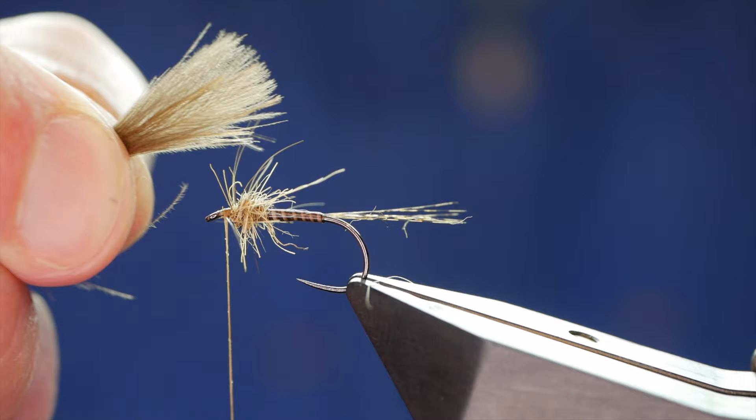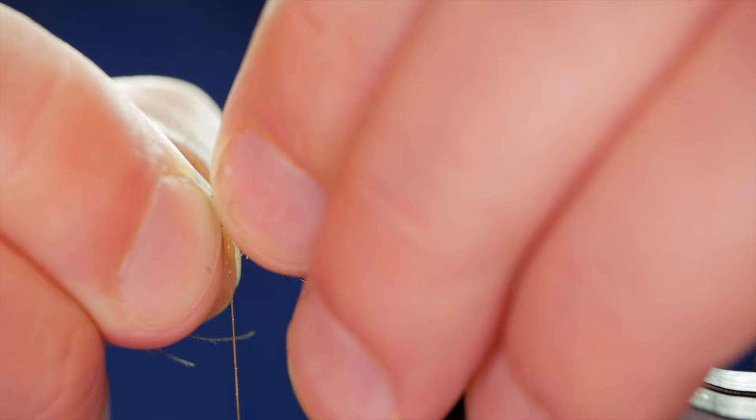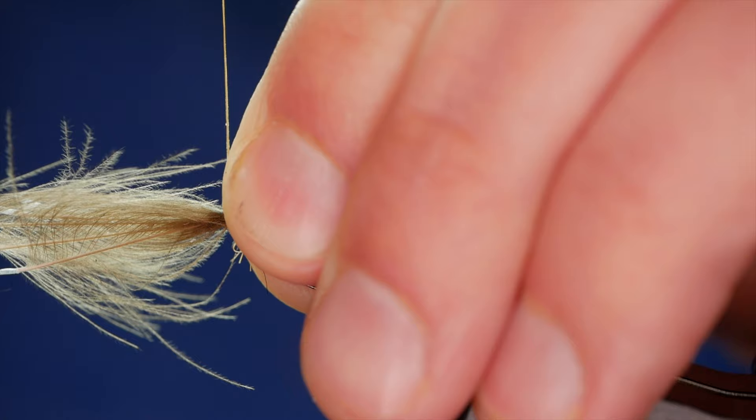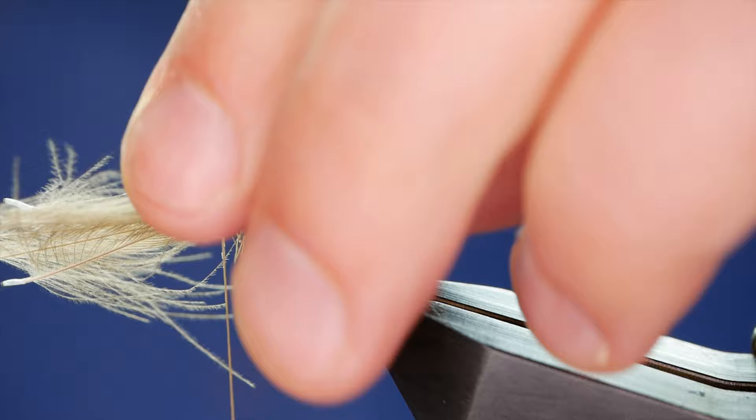So what I want to do is I want to just tie it in just past the end of the body there as you can see. I'm going to dress that up. Pinch it with the thumb and forefinger of my left hand. And then get a couple of tight wraps. I'm going to just turn my rotary device so I can check the other side. That looks okay. So I'm going to lift the front of the CDC. Get a couple of turns in front.